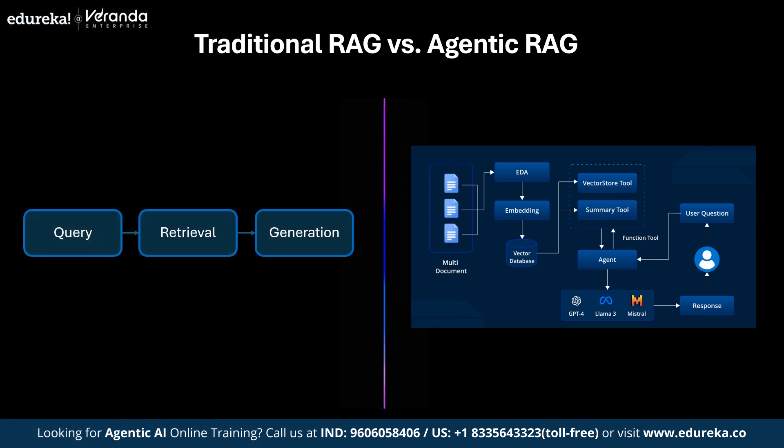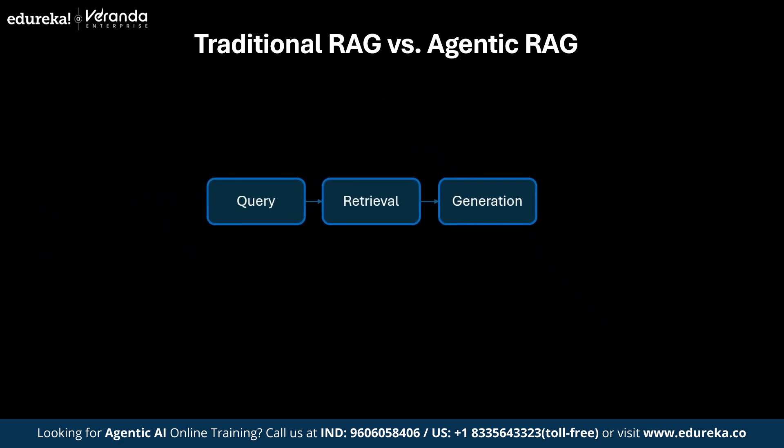Now let's see how Agentic RAG stacks up against traditional RAG. Traditional RAG operates simply: you submit a query to a retriever, retrieve the most relevant documents or data, and pass everything to your LLM for response generation. While it's easy to implement, it lacks the ability to adapt in real time. If your retriever overlooks something, the LLM is unaware and cannot revisit the retrieval process.